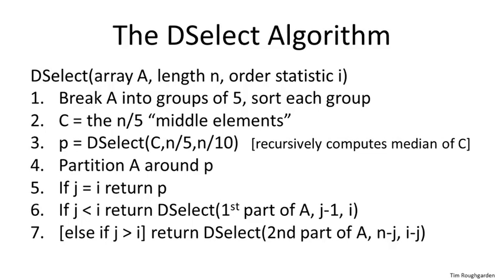The winner of each of these n/5 first-round matches is the median of those five — the third largest element out of the five. We take those n/5 first-round winners, copy them into a new array C of length n/5, and then run the second round of our tournament, electing the median of these n/5 first-round winners as our final pivot. We do that by recursively calling deselect on C for the n/10 order statistic. We call the pivot P.